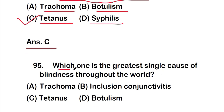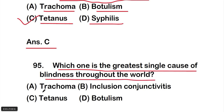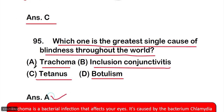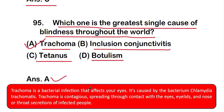Question number 95: Which one is the greatest single cause of blindness throughout the world? Option A: trachoma, option B: inclusion conjunctivitis, option C: tetanus, option D: botulism. The correct answer is option A — trachoma. Trachoma is a bacterial infection caused by Chlamydia trachomatis that affects the eyes. It is contagious, spreading through contact with the eyes, eyelids, and nose or throat secretions of infected people.